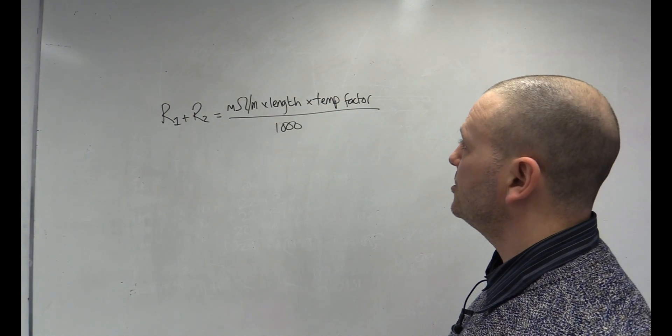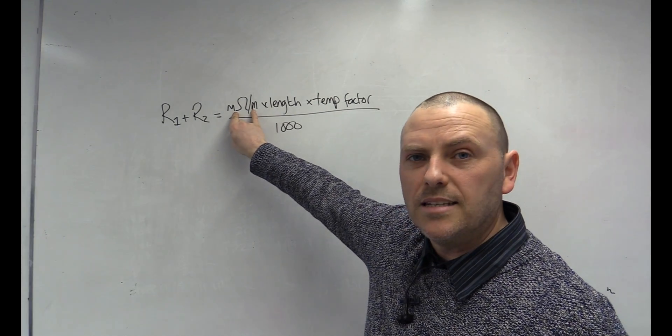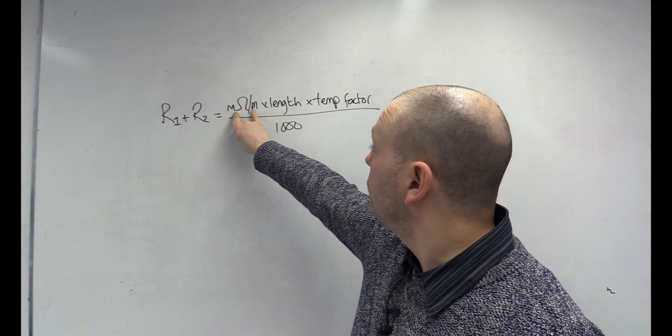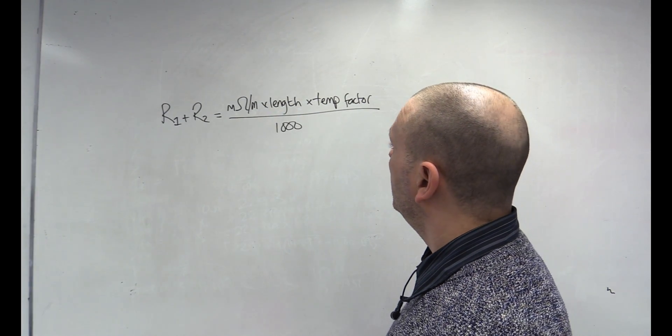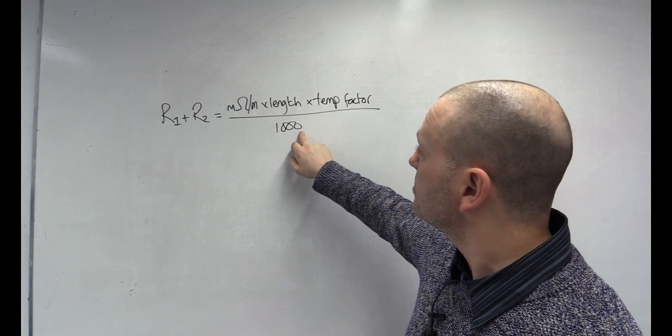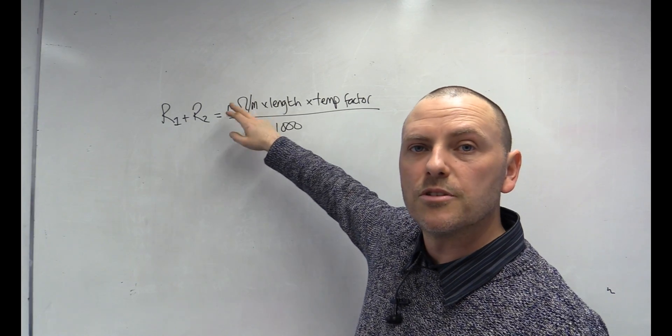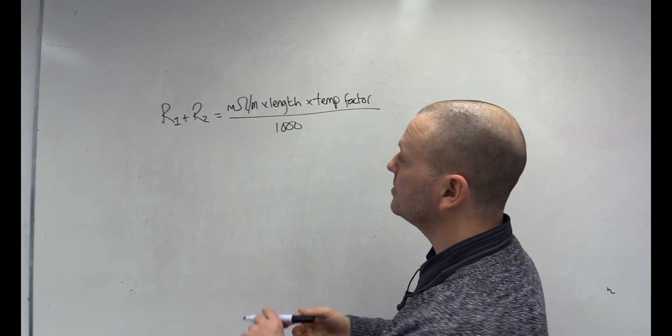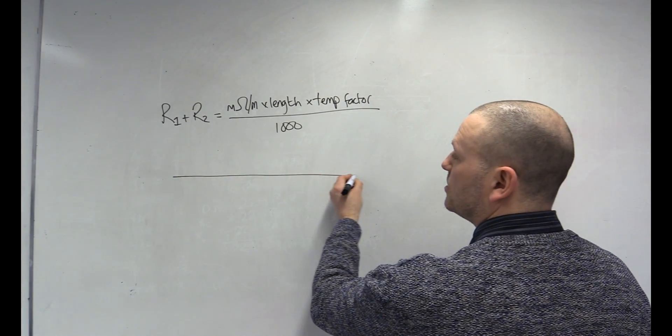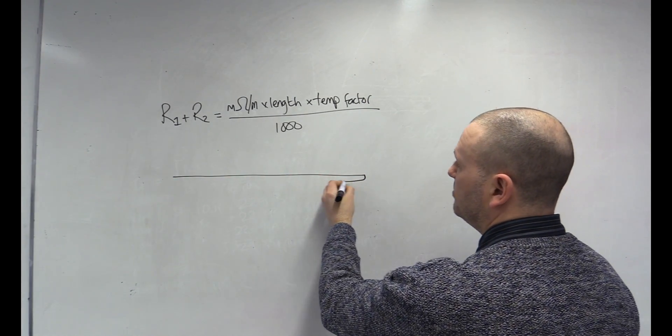And that goes here. Other than that, it's just a value per meter, which is given in table I1, times the length of our circuit, and we divide it by 1,000 here, to change it from milliohms to ohms. And that's going to give us the resistance of our live cable to our end of our circuit, and then back again.